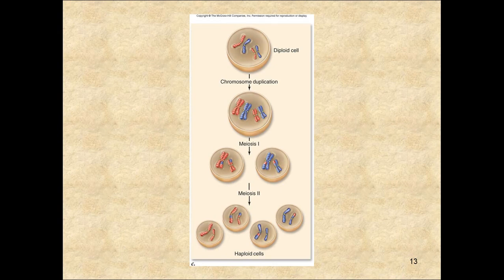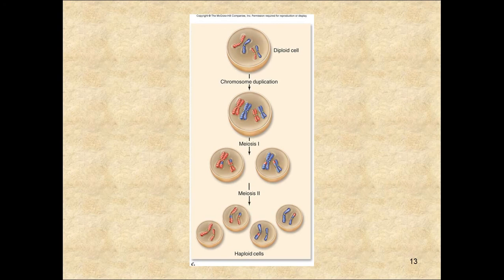Meiosis I is also called reduction division because the new daughter cells now only have one chromosome instead of two. They started out with mom chromosome 1 paired up with dad chromosome 1, but at the end of meiosis I, you have either mom's chromosome or dad's chromosome, but not both. Meiosis II is not reduction division because all we're doing is separating sister chromatids — separating the original from its duplicate.